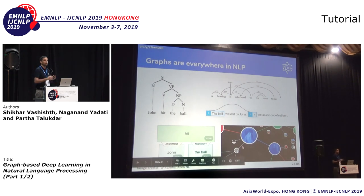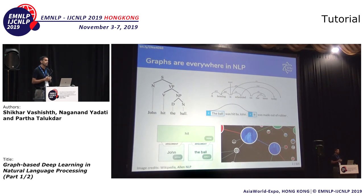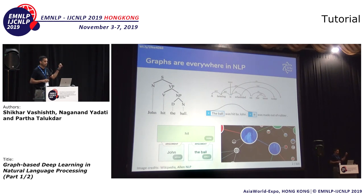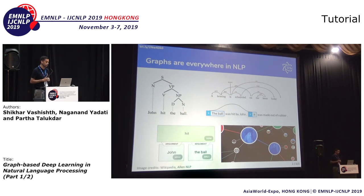But we could also go beyond the document level to the corpus level, such as knowledge graphs, which are entity-relationship graphs where nodes represent objects of interest and edges are the relationships connecting those entities. For example, 'Asia World Expo' would be a node, 'Hong Kong' would be another node, and 'Asia World Expo is located in' would be the relationship connecting those two entities. These are various forms of graphs defined at different granularities, from sentence to document to corpus level.